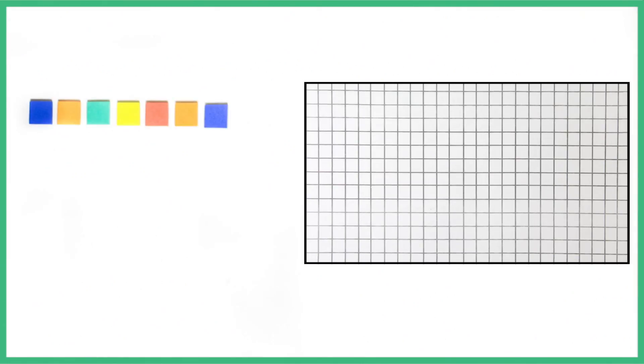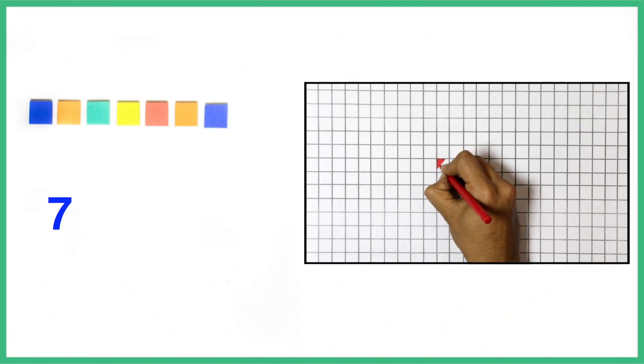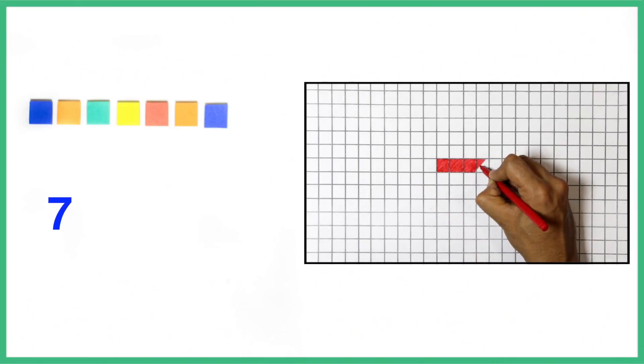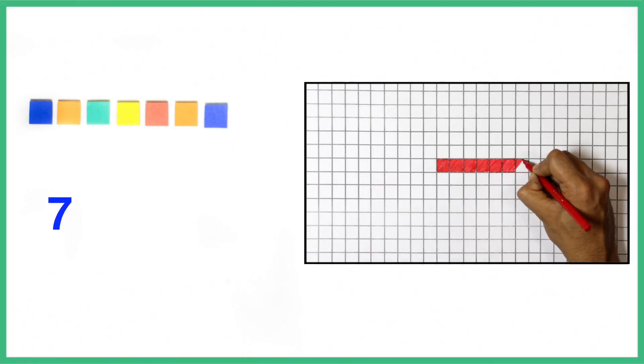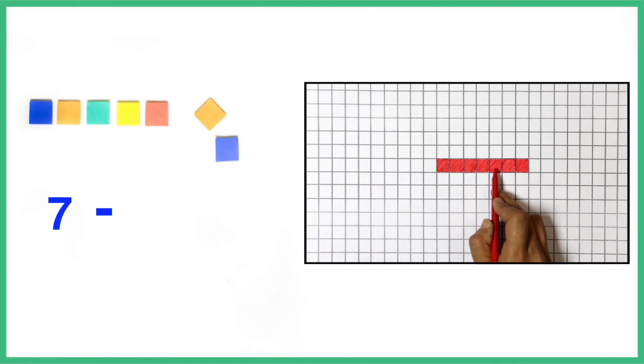Place 7 counters on the table. Shade 7 squares on a square ruled paper. Ask a student to take away 2. There are 5 remaining. 7 minus 2 is equal to 5.